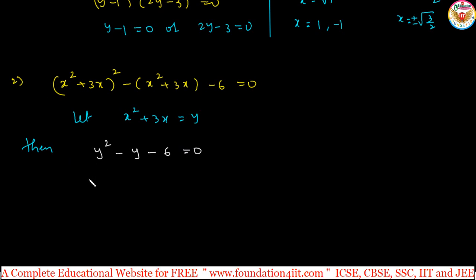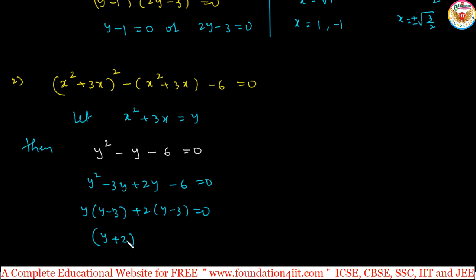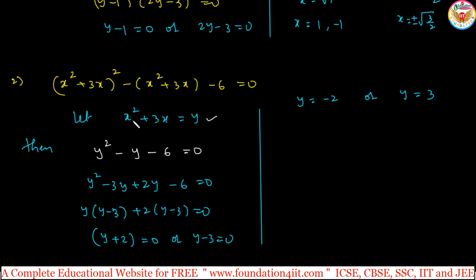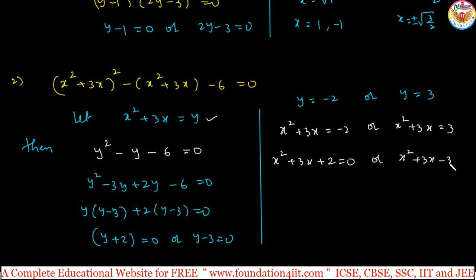We can start doing factorization. y squared minus y minus 6: split as minus 3y plus 2y minus 6 equals 0. Same factorization method: y(y minus 3) plus 2(y minus 3) equals 0. Finally, (y plus 2)(y minus 3) equals 0, so y equals minus 2 or y equals 3. Now replace the value of y. y is actually x squared plus 3x. So x squared plus 3x equals minus 2 or x squared plus 3x equals 3. It has become quadratic equations again.